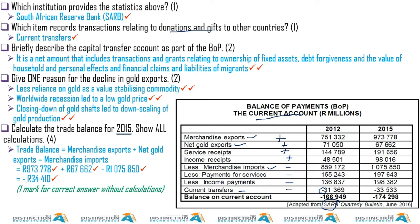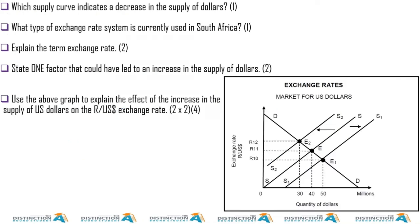For 2015, the trade balance is: merchandise exports plus net gold exports minus merchandise imports, using figures 960, 67, and 1 million. Remember all figures are in millions of rands, so put an 'M' after each figure. To put that in perspective: this figure represents about one trillion, another is 67 billion, and another nearly 900 billion.